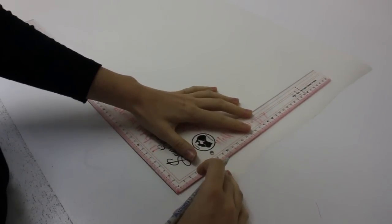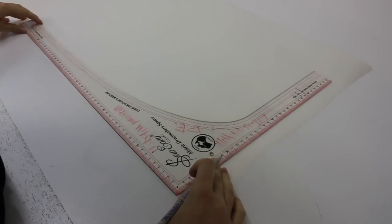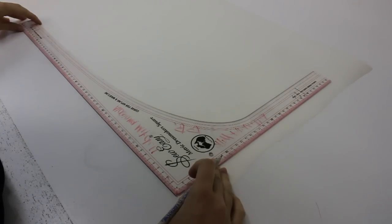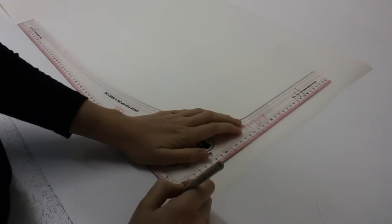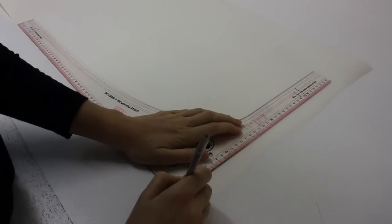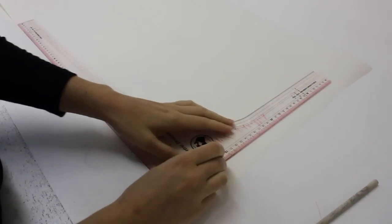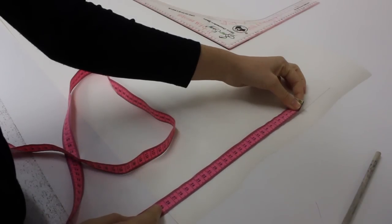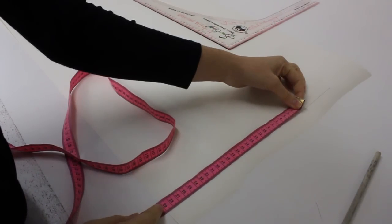Now this bolt of paper I bought from IKEA, so you can pick up a bolt of paper from there as well, but if you don't you can always use newspaper I suppose. So I'm just drawing a right angle line.